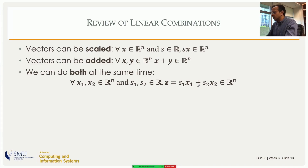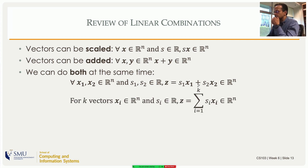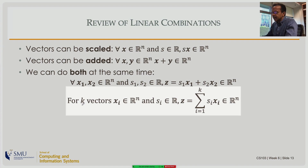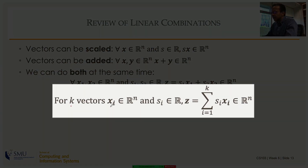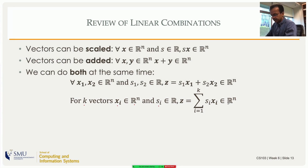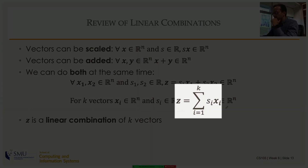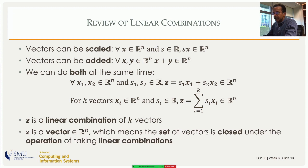The set Rn is closed under linear combinations also. We can take k vectors xi, all in Rn, and k scalars, and find a linear combination of the k vectors — that result is also a member of Rn. That z is what we mean by a linear combination of k vectors, and the fact that it is a member of Rn means the set is closed under taking linear combinations, because it's closed under scalar multiplication and vector addition.